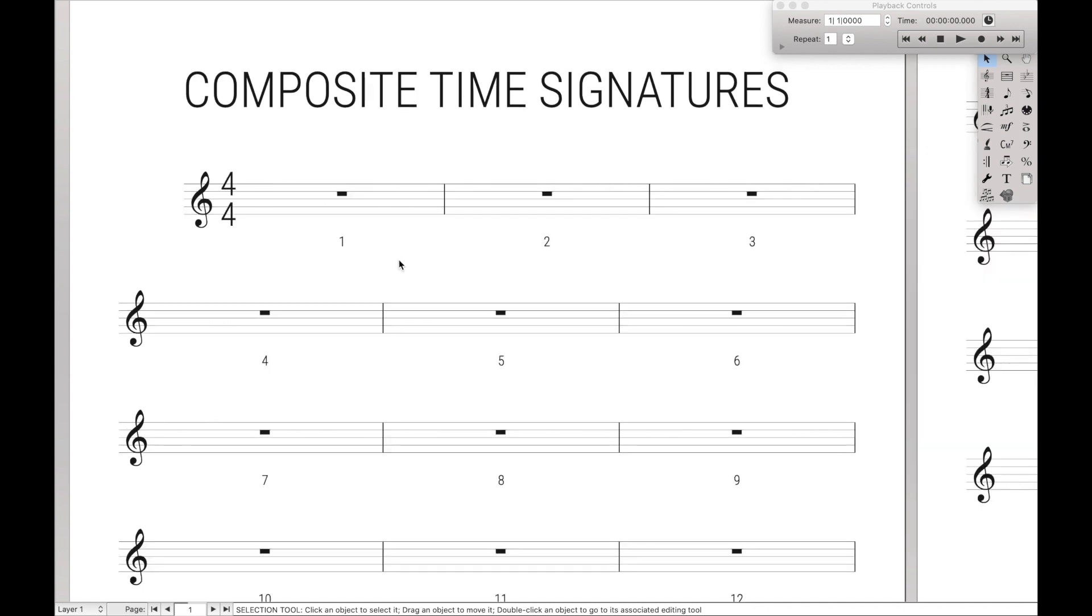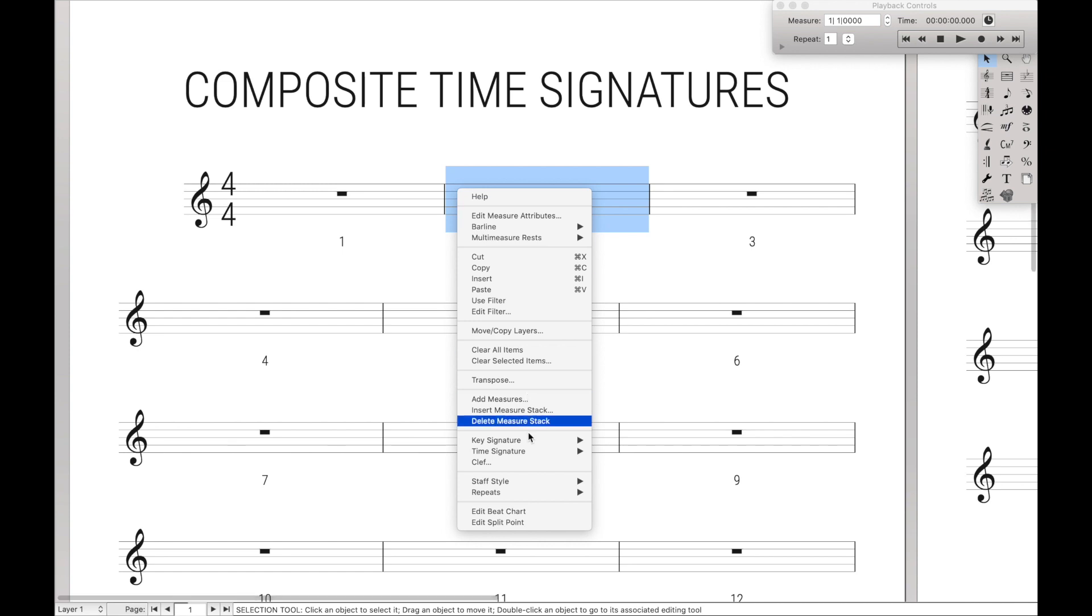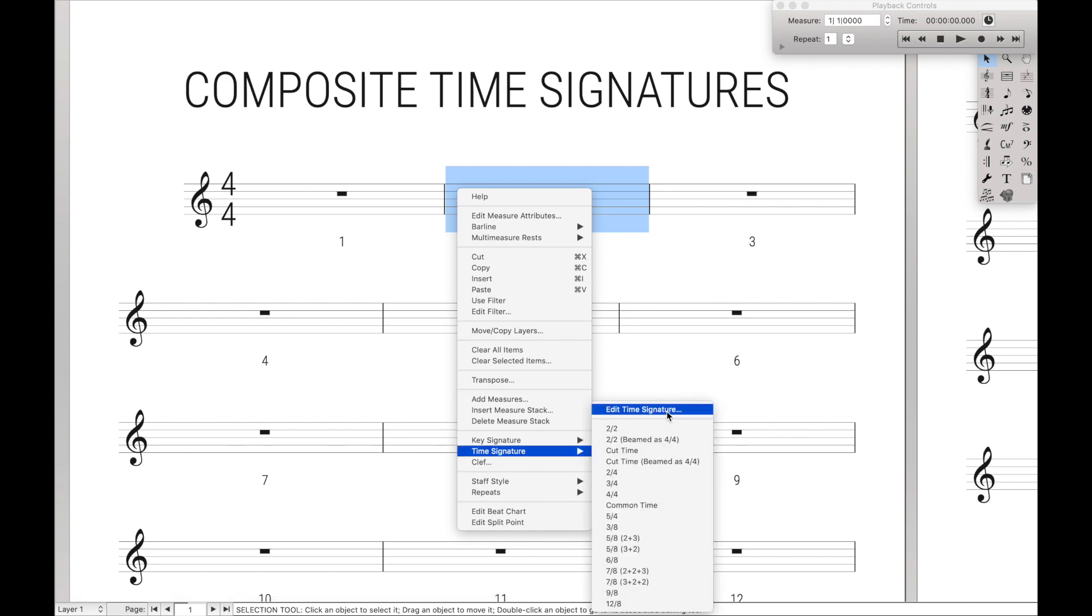So the process is actually quite easy. We're going to come over here to the tempo marking, right click, and hit edit time signature. You can also just click at measure and hit time signature, edit time signature here.